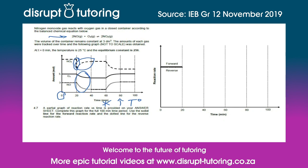Then at 60 minutes there is another disturbance — this time it is an increase in temperature. Once again, according to Le Chatelier's principle, the system will favor the reaction that opposes the disturbance. We can see from the graph that the amount of product decreases and the amount of reactants increases, so the reverse reaction is favored. Since an increase in temperature always favors the endothermic reaction, we can conclude that the reverse reaction is endothermic. After that, equilibrium is once again re-established until the end of the time period at 100 minutes.